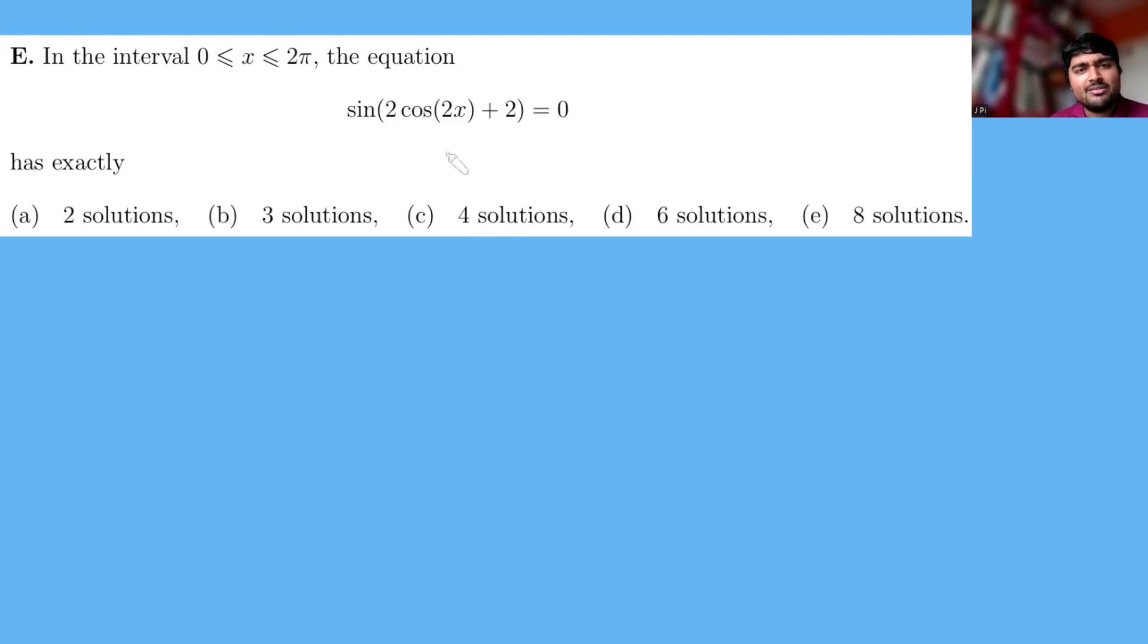So we've got sine of 2 cos 2x plus 2 is 0. It's a function within another function, so we probably want to start with the outer function. We've got sine of something, let's call this something u, equals 0. So sine of u equals 0.